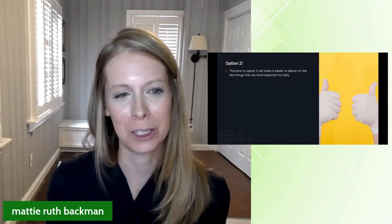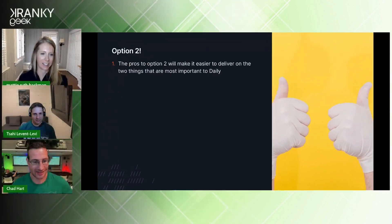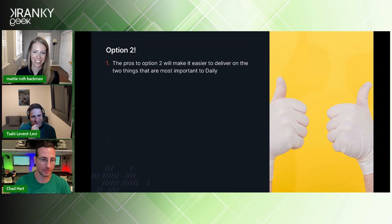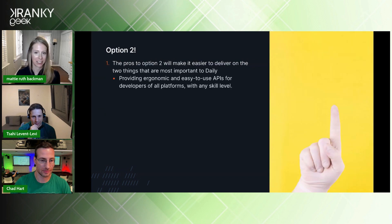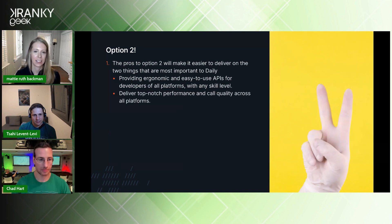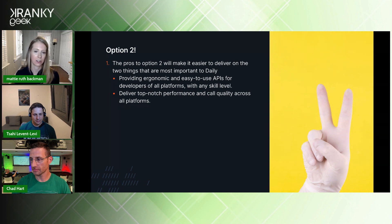We chose option two. The pros of option two really make it easier for us to deliver on Daily's two most important things. One: providing ergonomic and easy-to-use APIs for all developer customers — this option allows us to get the API right and keep it consistent across all platforms. And two: every performance and quality improvement we make now and in the future will immediately apply to all platforms, helping us ensure top-notch performance and quality across all supported platforms.